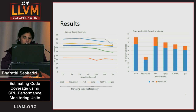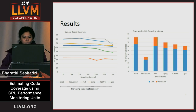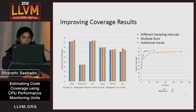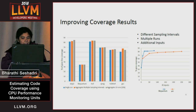We have coverage ranging from 35% to 85% on some of the SPEC benchmarks we experimented on. We also tried to improve coverage by aggregating results of several sampling runs and aggregating multiple runs for the same sampling interval, which contributed to an increase of 5 to 10 percent of coverage.